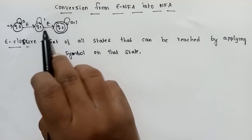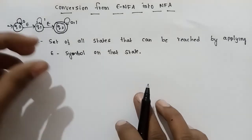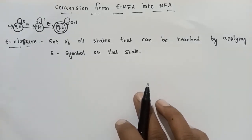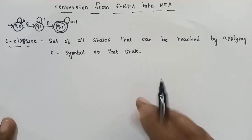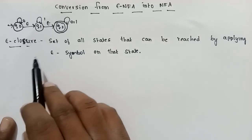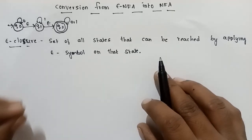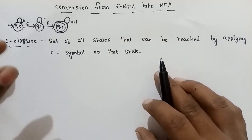Epsilon moves are eliminated in a normal NFA. We will explain this procedure in this video. Even if you think it is very difficult, if you practice the problems, you will find it becomes very easy. We will begin by explaining Epsilon Closure.